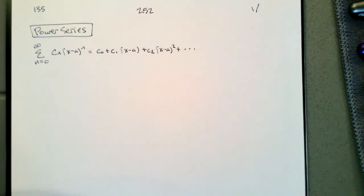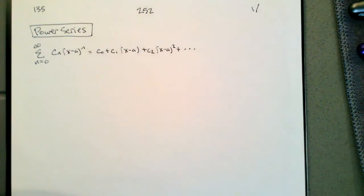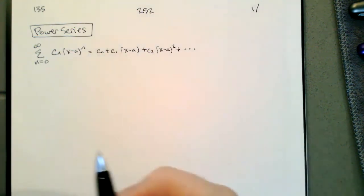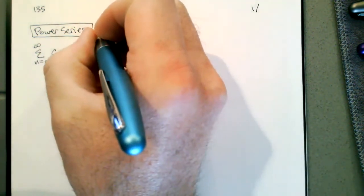Today we're going to start looking at power series. We want to think of a power series as a function in the form of a polynomial with an infinite degree, which is no longer a polynomial — it's a power series. That's why it's a different thing, but that's the shape. It's just like we start writing a polynomial and then keep going. So we want to think of power series as a function.